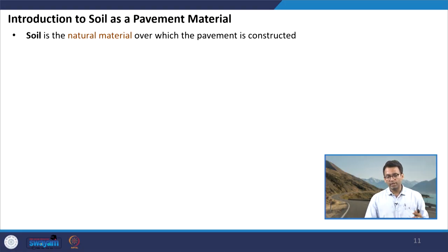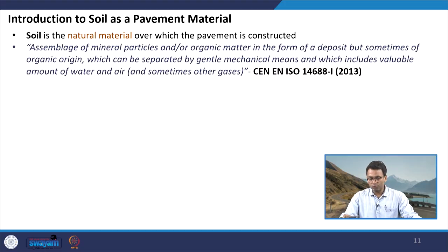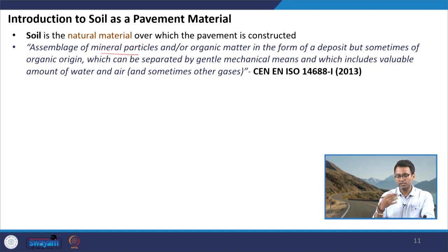With this background on the importance and need of studying pavement materials, let us start discussing the first pavement material in our list — soil. We will understand soil more as a pavement material. Soil mechanics is a very vast subject and we will not discuss all its concepts in detail; rather, we will focus on understanding the soil and its properties from the perspective of using it as a pavement material. Soil can be defined as a natural material over which the pavement is constructed.